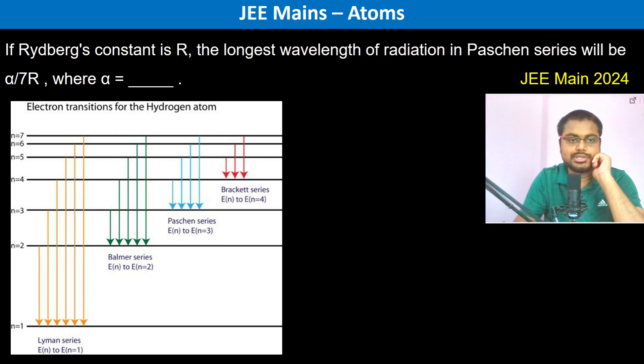If Rydberg's constant is R, the longest wavelength of radiation in the Paschen series will be alpha by 7R. So this is the Paschen series - the electrons from the higher orbitals come down to the third orbital.